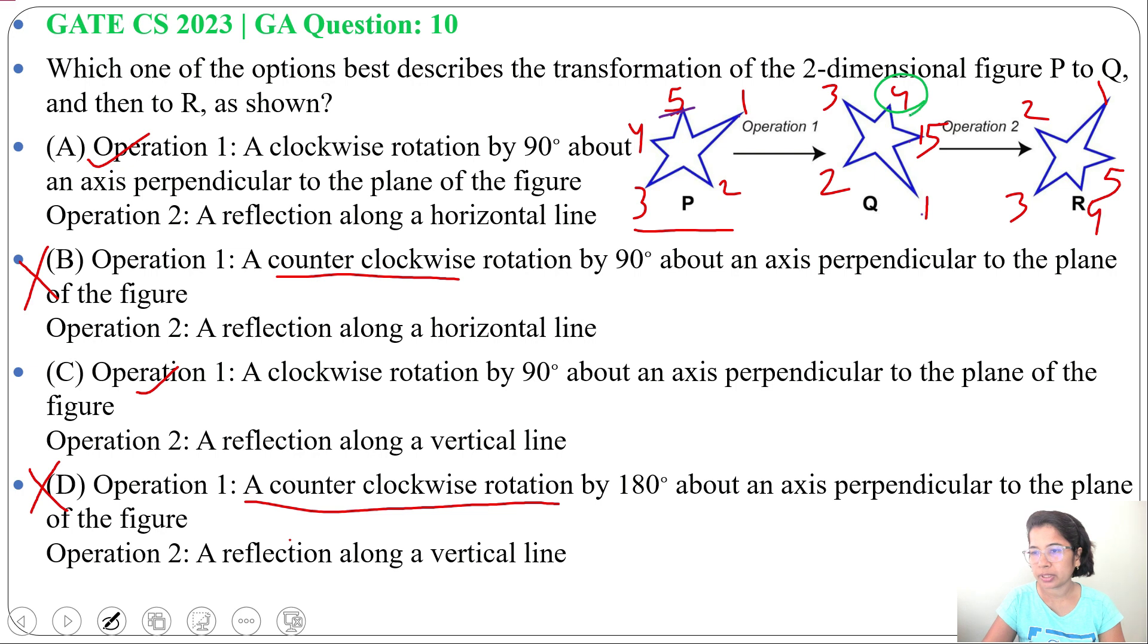Now check. Previously 4 was here. Now 4 is here. Previously 3 was here, upside. Now 3 is at downside. 1 and 2, these are downside. Now these are upside. And 5 was here, also 5 is at same position.